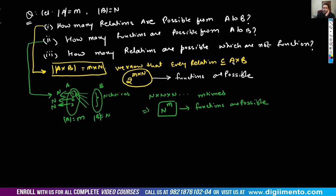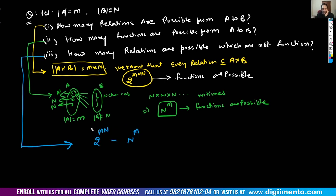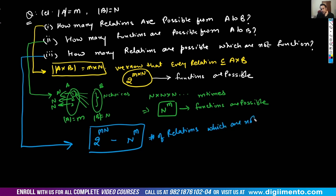The number of relations that are NOT functions is 2^(m×n) minus n^m. These three quantities — total relations, total functions, and relations that are not functions — are very important to know.